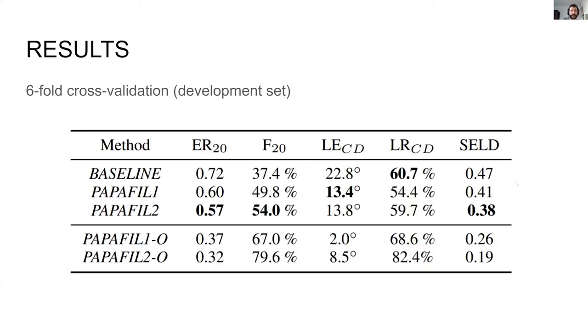This table summarizes the results for our two proposed methods compared with the baseline. The results for the oracle methods are shown at the bottom part of the table. The best results for each metric are highlighted. The first remarkable result is the good performance in three out of the four metrics: error rate, F-score and localization error, where both proposed methods outperform the baseline system. This result is reflected in the SELD score where again both proposed approaches outperform the baseline system.